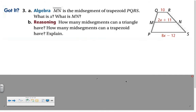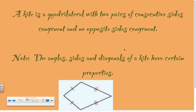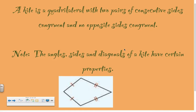For the practice question: MN is the mid-segment of trapezoid PQRS — find X and MN. Pause this movie, do problem 3A on your own, and press play when finished. Since that will be one of the questions, the solution will be skipped here. Now let's look at a kite. A kite is a quadrilateral with two pairs of consecutive sides congruent and no opposite sides congruent.